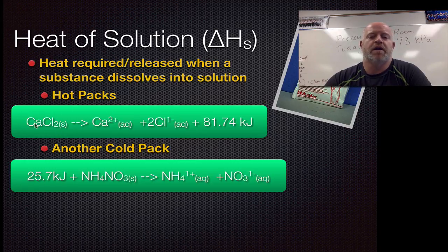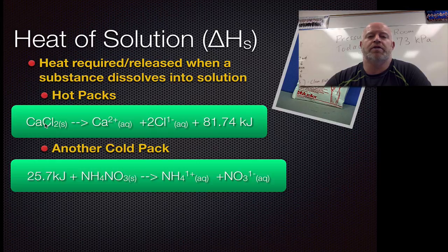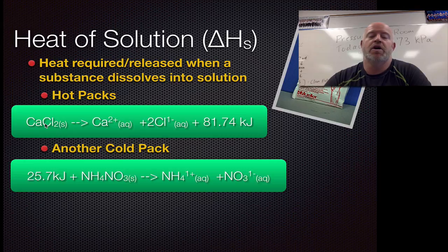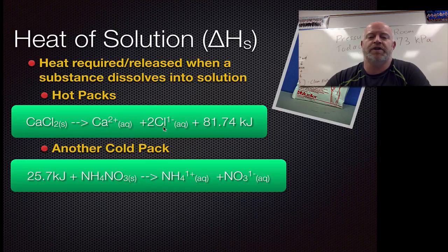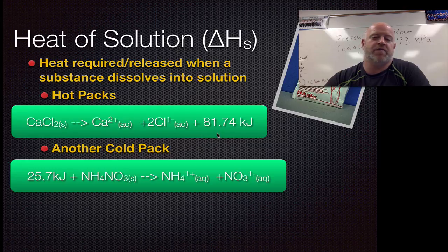What you're doing is taking something like calcium chloride and combining it with water, putting it into solution. Those hot packs that are liquidy, not the disposable ones but the liquidy ones—when the calcium dissolves and the chlorine dissolves from the calcium chloride, it releases 81.74 kilojoules of energy every time you dissolve a mole's worth of this stuff.